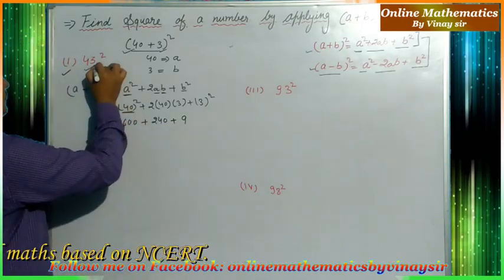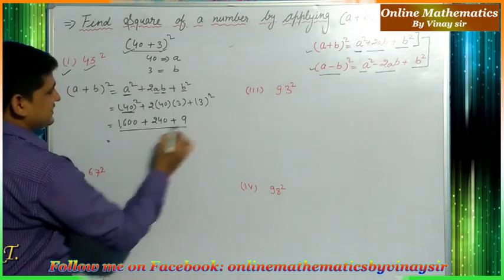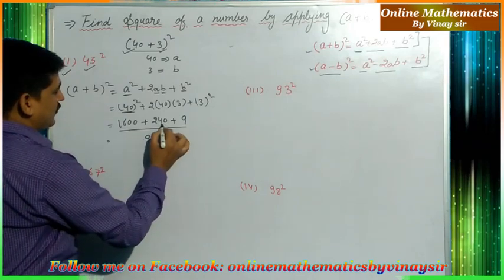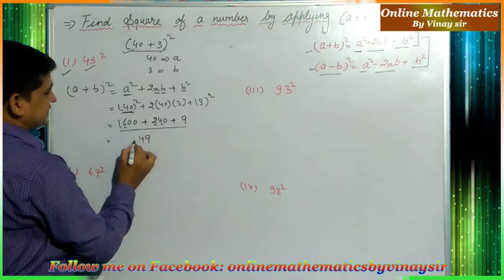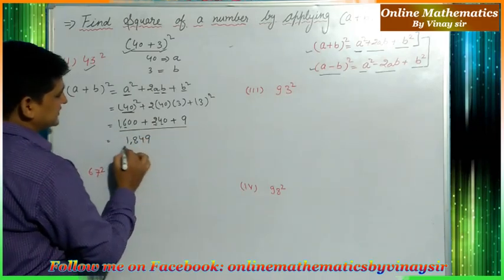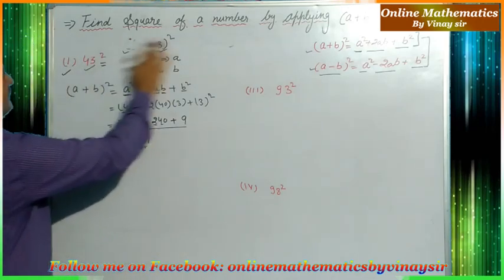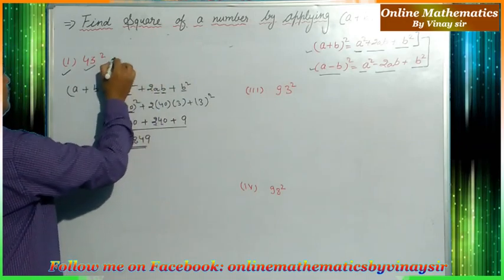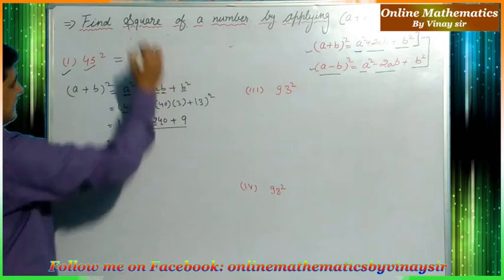To find the value of 43², we add the three values: 1600 + 240 + 9. Adding these gives us 1849. So 43² = 1849.